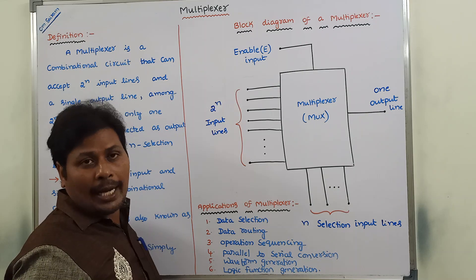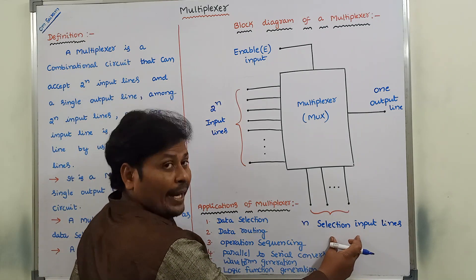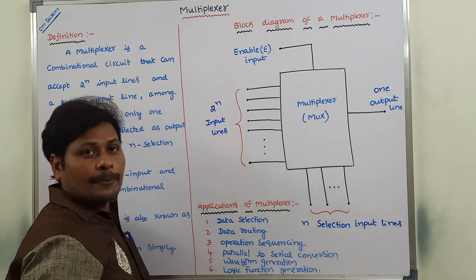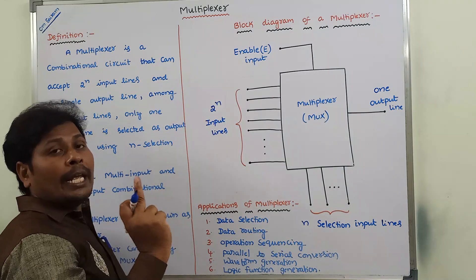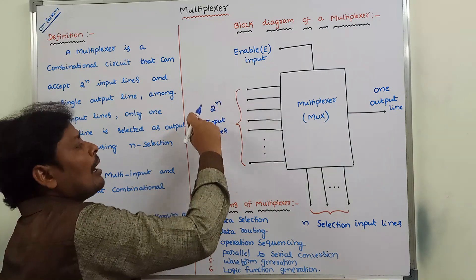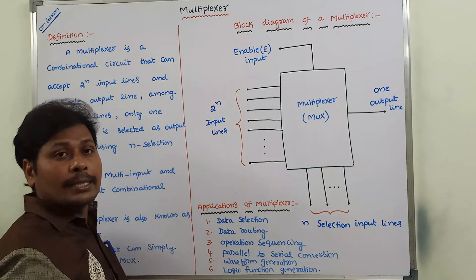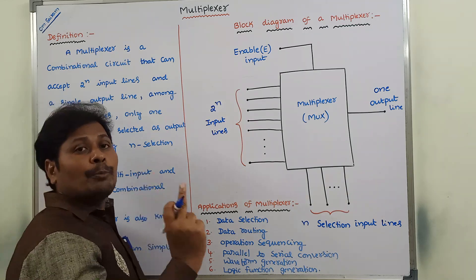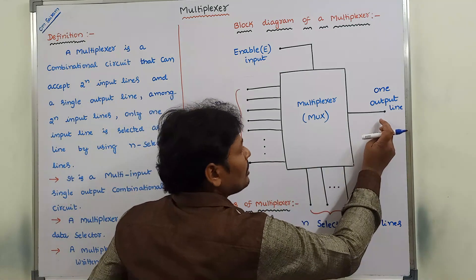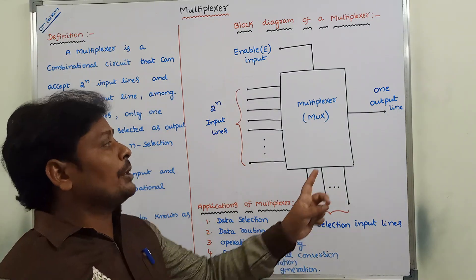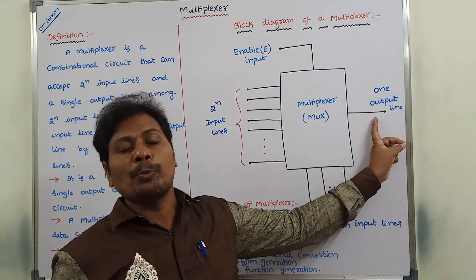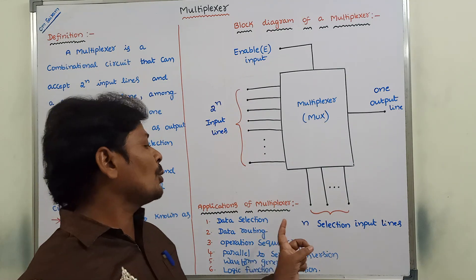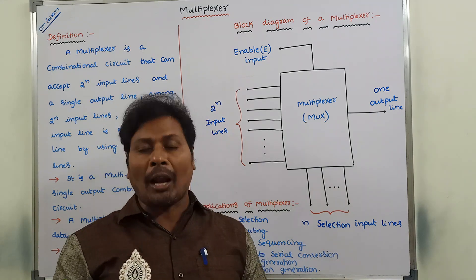By using these n selection input lines, we have to select only one input line among the 2^n number of input lines. Whatever input line is selected, that input line can be treated as the output line. So to determine one output line among the 2^n number of input lines, we have to use n selection input lines.